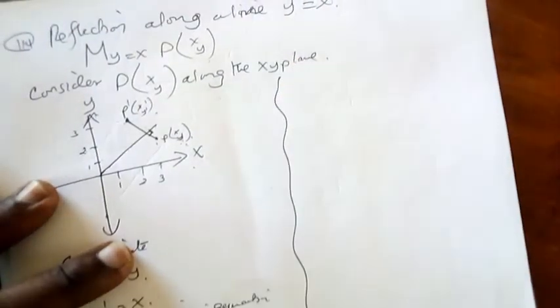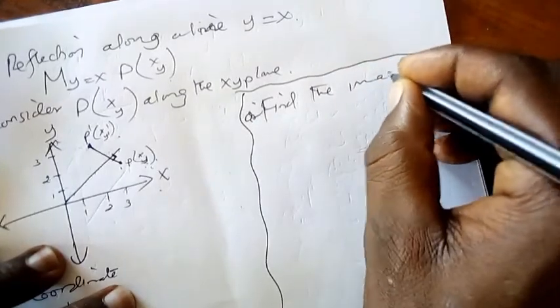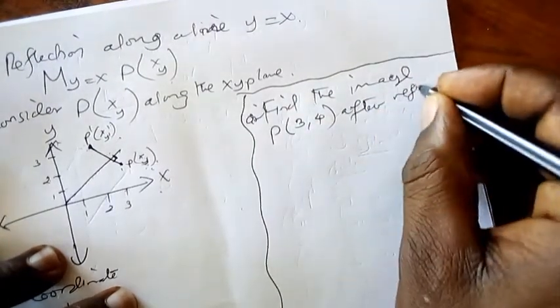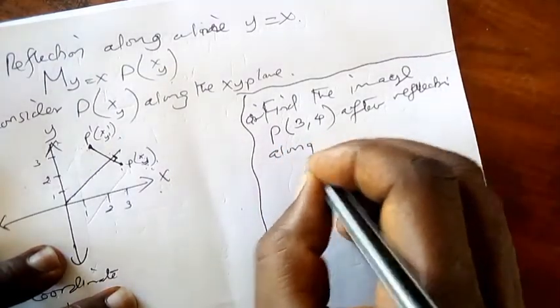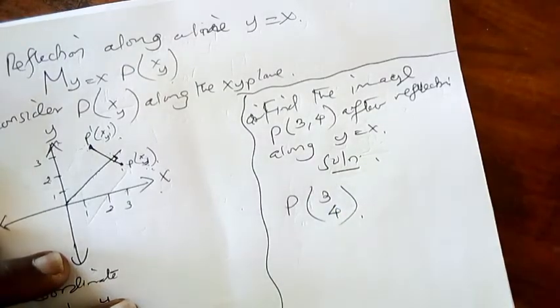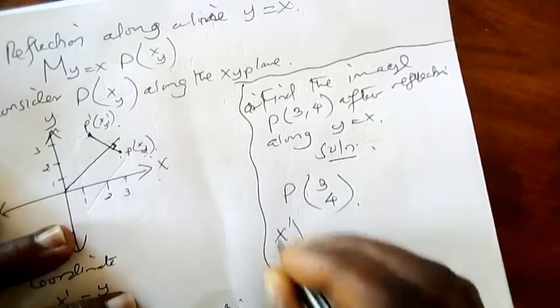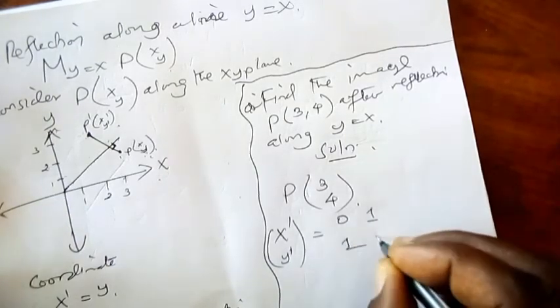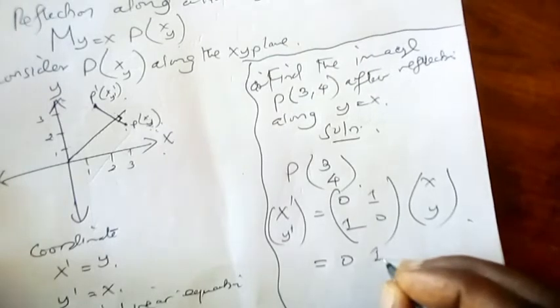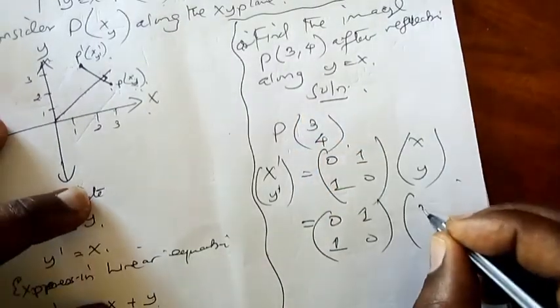Let's see example number one. Find the image of point (3, 4) after reflection along y = x. First we write the solution. The given point is (3, 4). We use the general formula: (x', y') = [0, 1; 1, 0] times (x, y). Our transformation is [0, 1; 1, 0]. Then we substitute: [0, 1; 1, 0] times [3, 4].